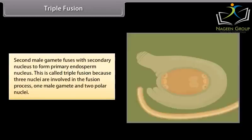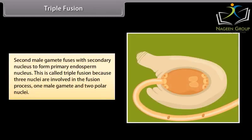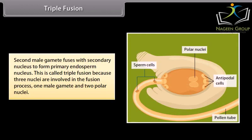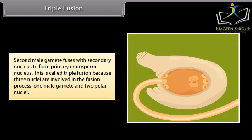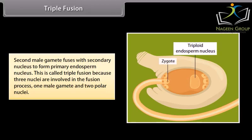Triple fusion. Second male gamete fuses with secondary nucleus to form primary endosperm nucleus. This is called triple fusion because three nuclei are involved in the fusion process: one male gamete and two polar nuclei.